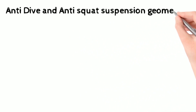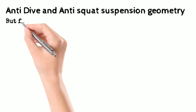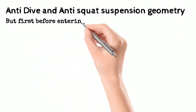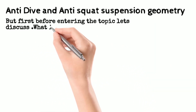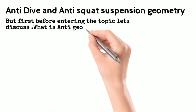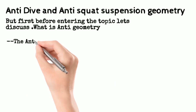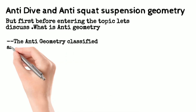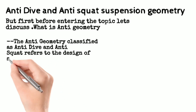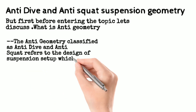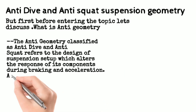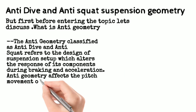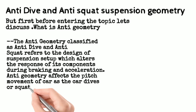Before entering this topic, we need to understand why we need these geometries in our design and how anti-geometries affect our design. The anti-geometries are classified into two types: anti-dive and anti-squat, which alter the response of the components during braking and acceleration. The anti-geometry affects the pitch movement of the car as the car dives or squats.